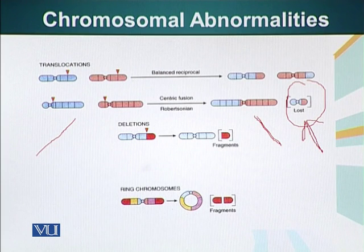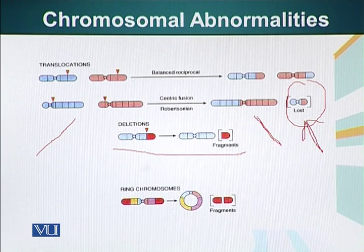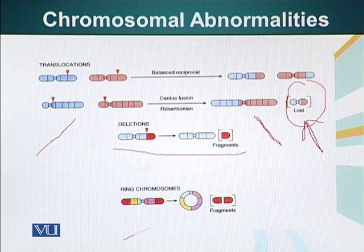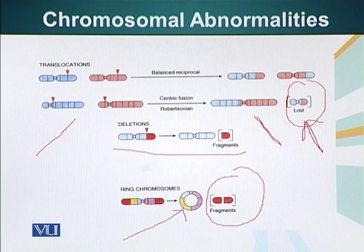The next category is deletion, where a small piece of chromosome breaks off and is lost. Another type of chromosomal abnormality occurs when the two tips of a chromosome break off and the chromosome ends join together to form a circle — a ring chromosome — with the terminal fragments being lost.